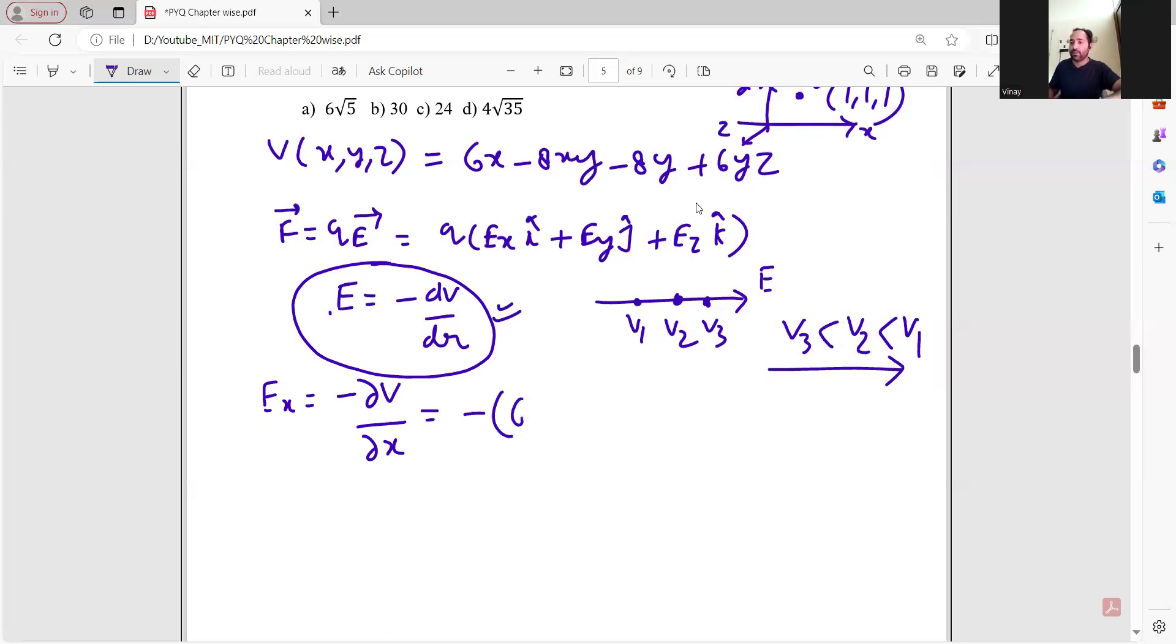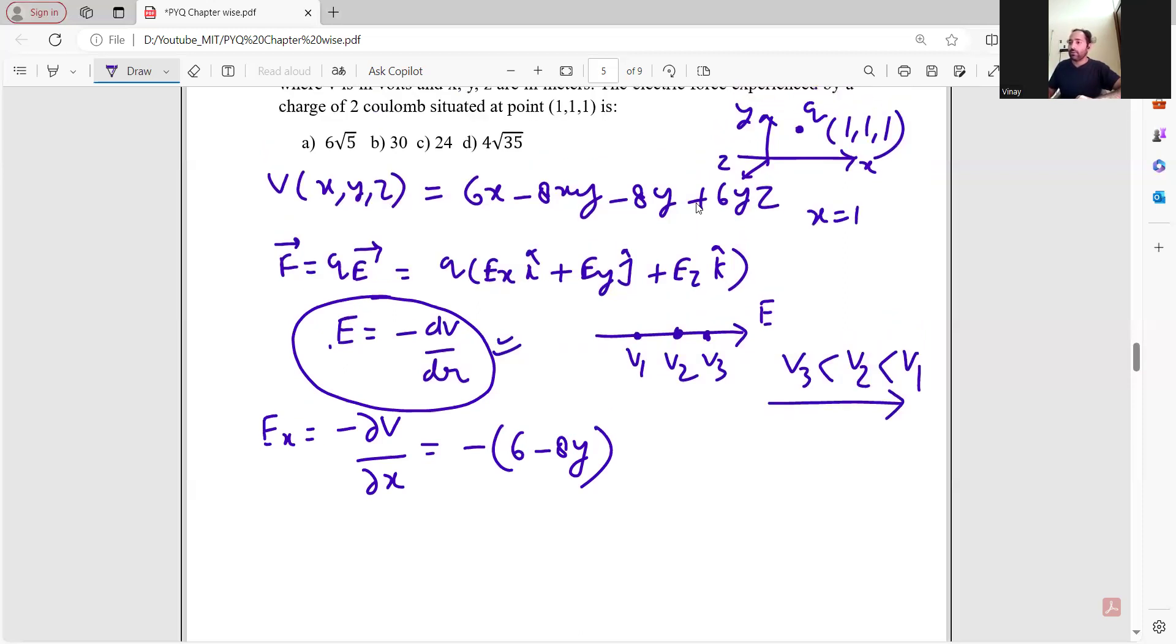Taking the derivative with respect to x: minus bracket, the derivative of 8xy gives 8y, and the constant terms are zero. So Ex equals plus 8y, and at point (1,1,1), Ex equals 8 plus 2.